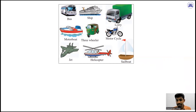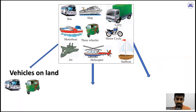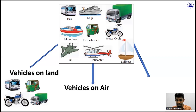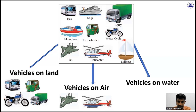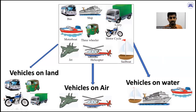But I am going to categorize them into three categories. Vehicles on the land: bus, three-wheeler, motorcycle, and lorry. Vehicles on the air: jet and helicopter. And vehicles on water: sailboat, ship, and motorboat. You need to identify the characteristics, divide into groups, and name those groups. That is the lesson.